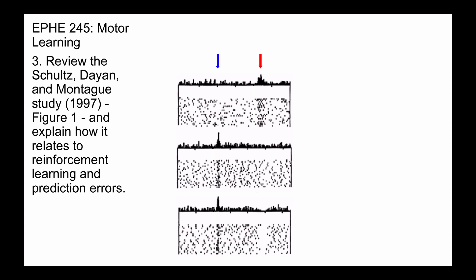In the second panel, there's a prediction error to the cue, because the monkey doesn't know what's coming. So the cue is the outcome, and there's no expectation, so there's a prediction error. However, at the time of the reward, the reward is given, so there's an outcome, but there's an expectation of that reward, so there's no prediction error.